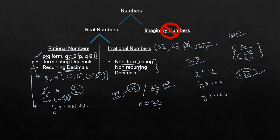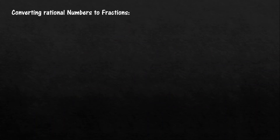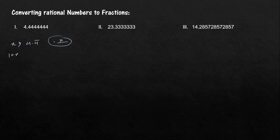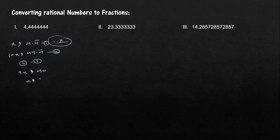Now let's see how to convert recurring decimals into fractions, because sometimes our answer may be in fraction form while the option is given in recurring decimal form, or vice versa. Let x = 4.4̄4̄. My goal is to eliminate the repeating part after the decimal. I multiply by 10 to get 44.4̄4̄. Subtracting the first equation from the second gives 9x = 40, so x = 40/9. That is the fraction value of 4.44̄.